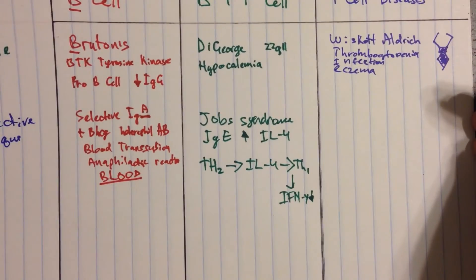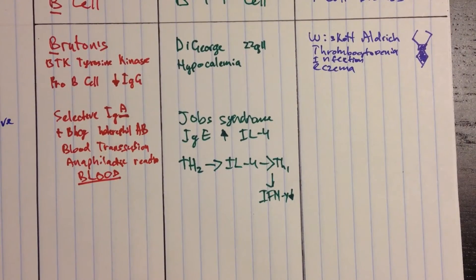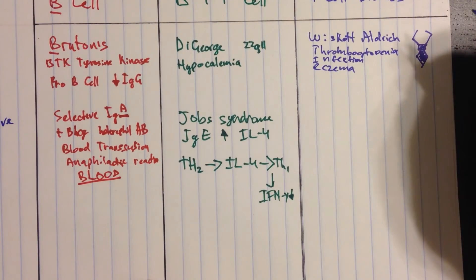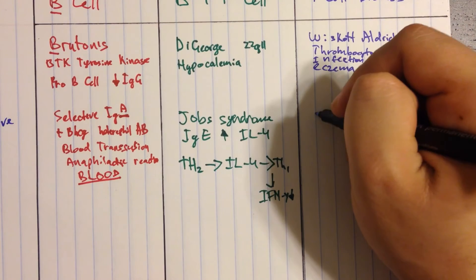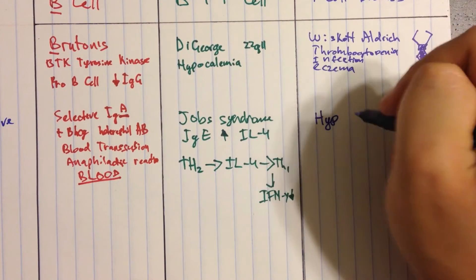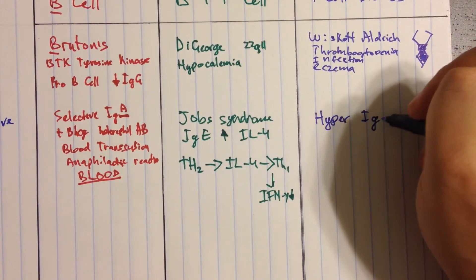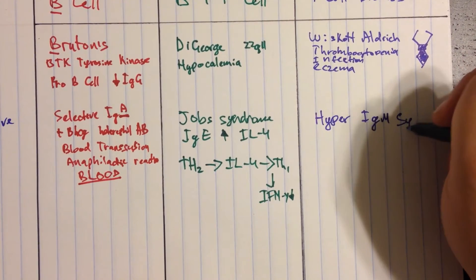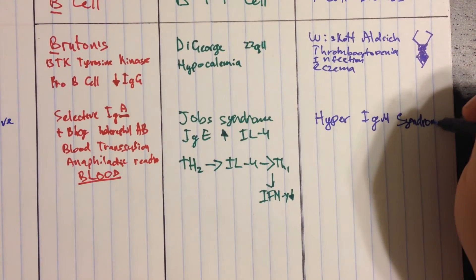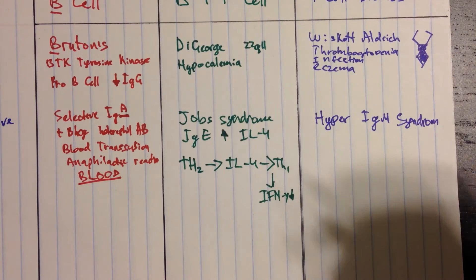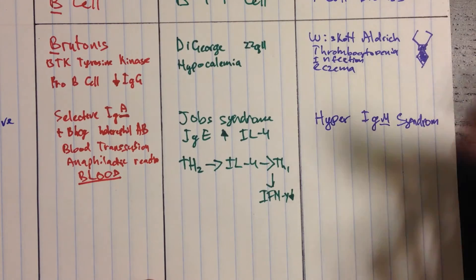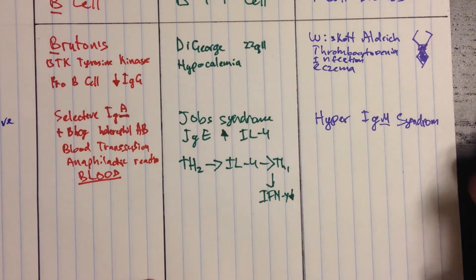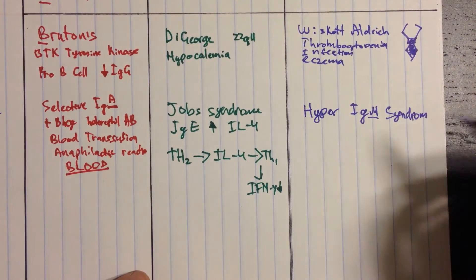Now under T cells in the blue, what we want to think about is Hyper-IgM syndrome. Now, what happens here? Why do you have all these IgM? Well, IgM is the first kind of antibody that a B cell makes, before it class-switches. So since we're making a lot of IgM, it's probably because we can't make anything else. And that's what's happening here. We're stuck.